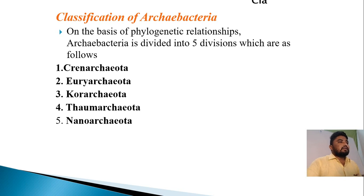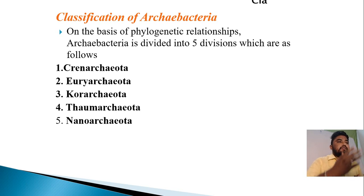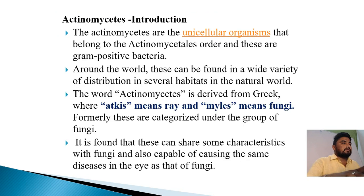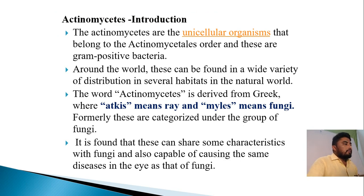The classification of archibacteria on the basis of phylogenetic relationship: archibacteria is divided into five divisions. Next, archibacteria further divides into actinomycetes.